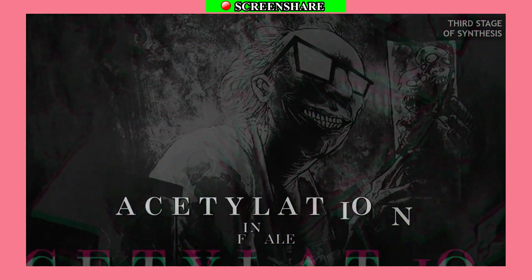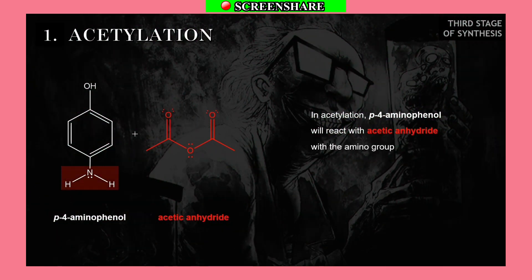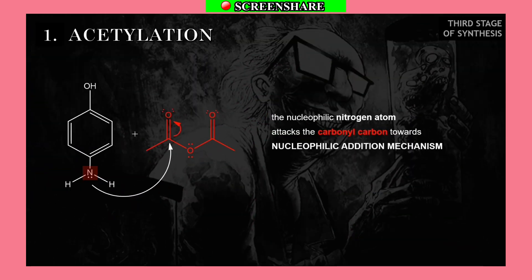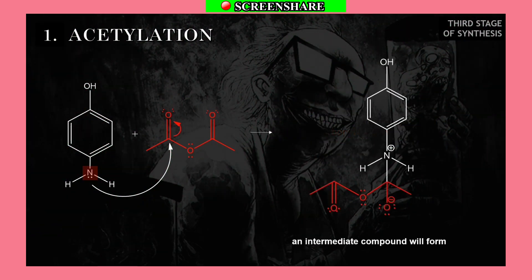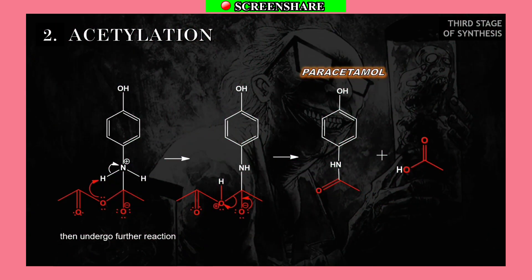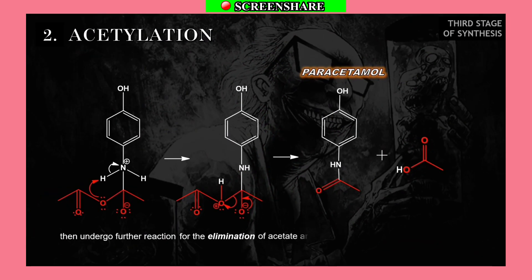In acetylation, para-aminophenol reacts with acetic anhydride. The amine group — the nucleophilic nitrogen atom — attacks the carbonyl carbon via a nucleophilic addition mechanism.